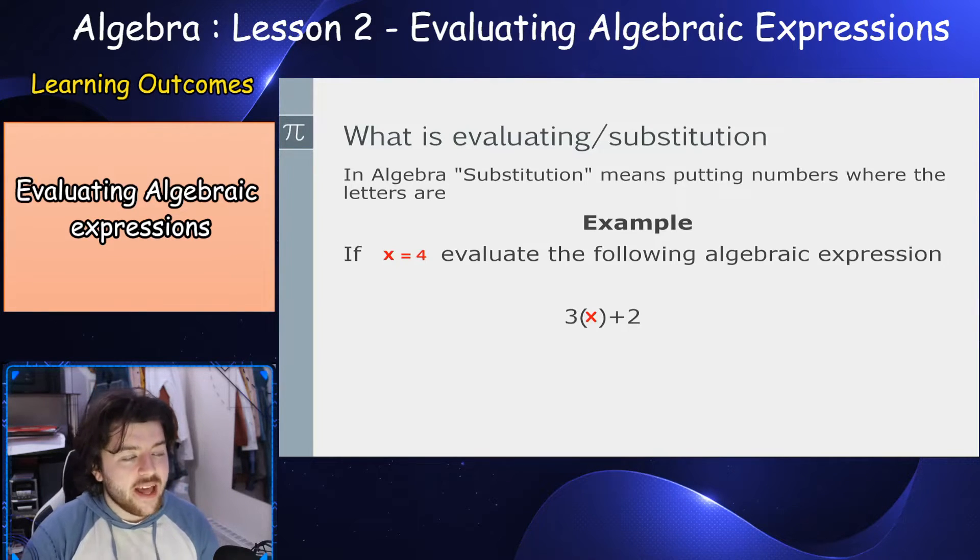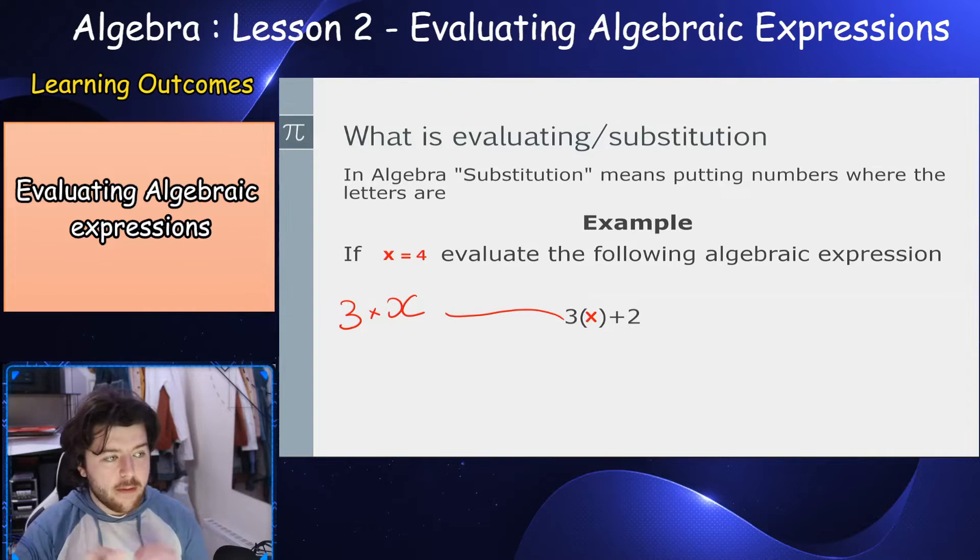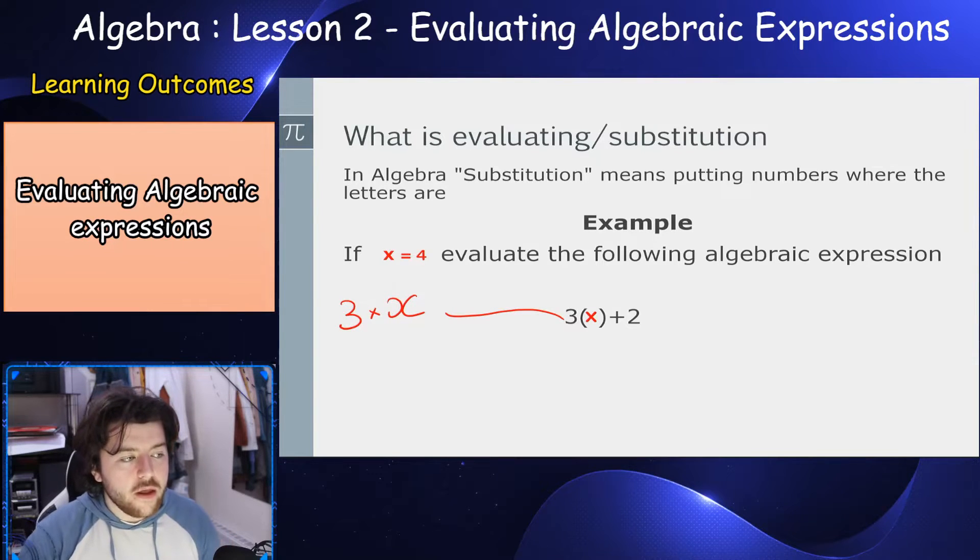So for example, if x is equal to 4, evaluate the following algebraic expression 3x plus 2. Remember, 3x is the same as 3 multiplied by x, they're right next to each other. How we do this is we take out our x and we put in its numerical value. So the x goes away, the 4 goes in. So we have 3 bracket 4 plus 2.